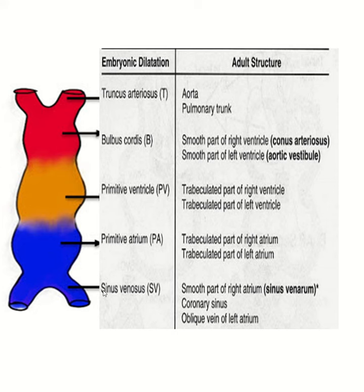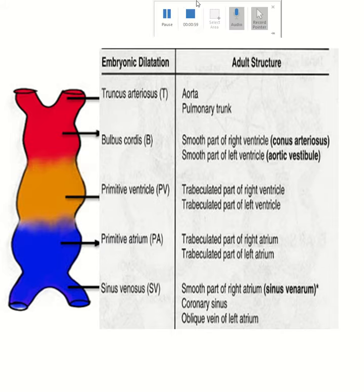From the right horn of the sinus venosus, the smooth part of the right atrium is developed. From the left horn of the sinus venosus, the coronary sinus and oblique vein of the right atrium are developed. The smooth part of the left atrium is developed from the absorption of the single pulmonary vein.